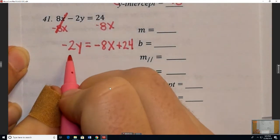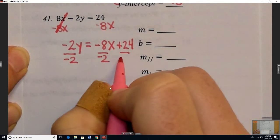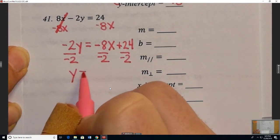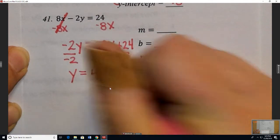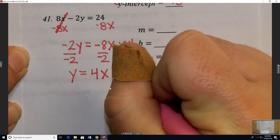Once we're here, we need to get just 1y, so we'll divide each part by negative 2. And that will give us 1y. Negative divided by a negative will give us a positive 4, and then the 24 divided by negative 2 gives me a negative 12.